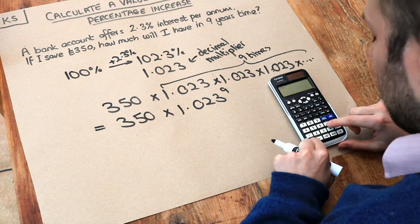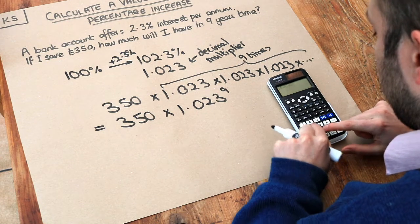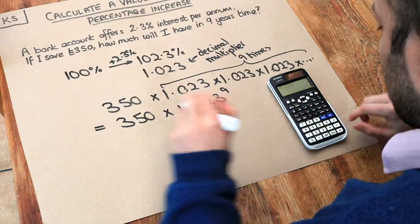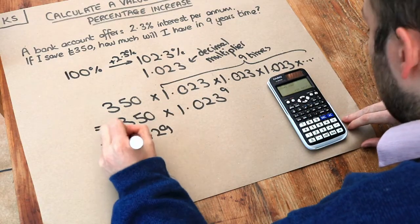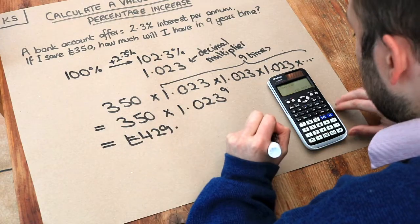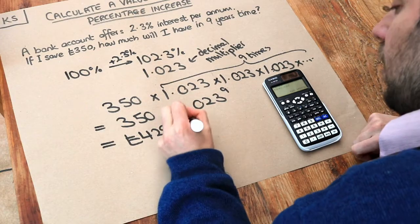So we do that on our calculator. 350 times 1.023 to the power of nine. I'm going to get £429. And let's round it to two decimal places to the nearest penny, £429.49.